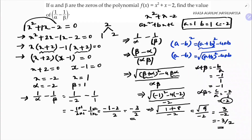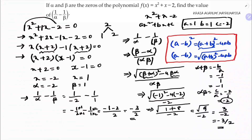See, both methods give the same answer. The second method using the formula is better to learn because if you're not able to split the middle term, you must use this formula. Here I was able to split the middle term so the first method was easy, but for questions where you can't split the middle term, you'll need to use this formula only.